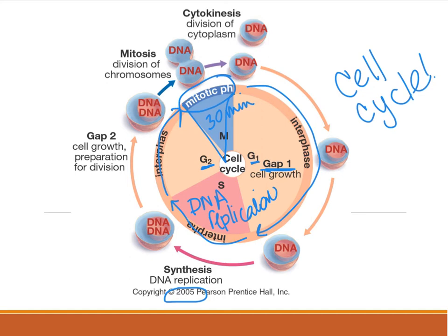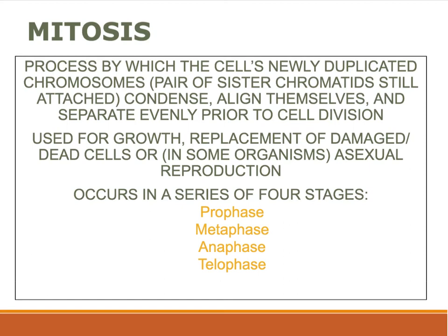Mitosis is the process by which the cell's newly duplicated chromosomes condense, align themselves at the equator of the cell, and divide evenly, right before the cell actually divides. It's used for growth, replacement of damaged or dead cells, or asexual reproduction. There are four stages: prophase, where the chromosomes are condensing; metaphase, when they line up at the equator; anaphase, when they start to separate; and telophase, right before cytokinesis.